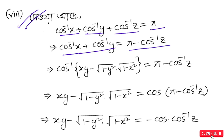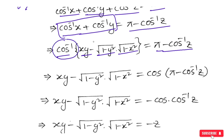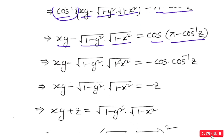Coming down to the next part: cos⁻¹x + cos⁻¹y gives us cos⁻¹(xy − √(1−y²)·√(1−x²)), and that is equal to cos⁻¹(−z), which means xy − √(1−y²)·√(1−x²) = −z.